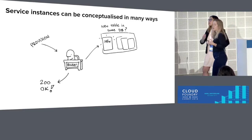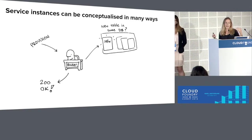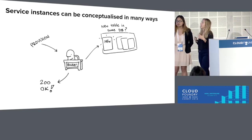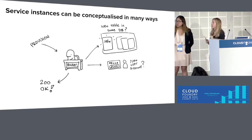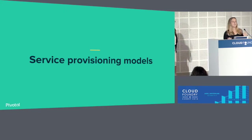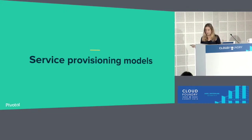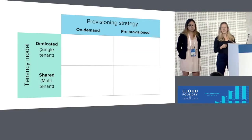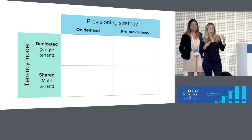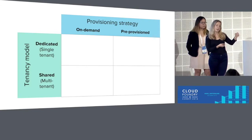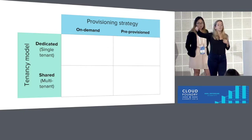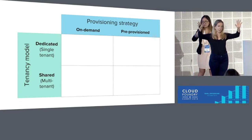The service broker is a way for app developers to be creating service instances, but service instances can be conceptualized and implemented in many different ways. It could be a new database, a new table in a database, a new user account in software that natively supports multiple users, or a new VM. Now let's talk about different models that service broker authors choose to offer for provisioning. We're thinking about this on two axes: provisioning strategy — pre-provisioned versus on-demand — and tenancy.